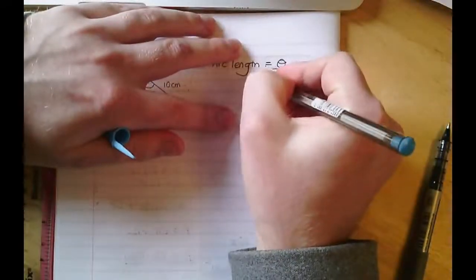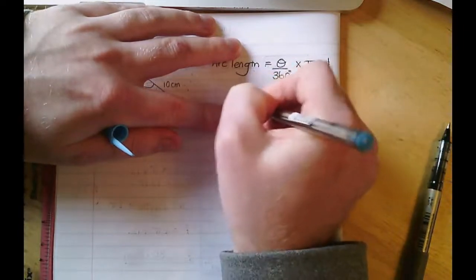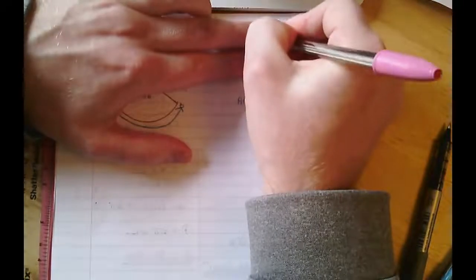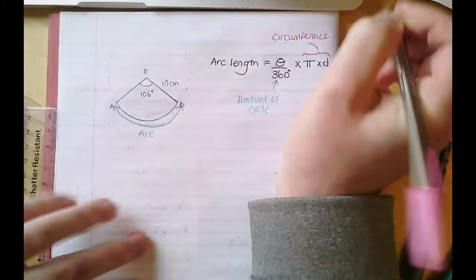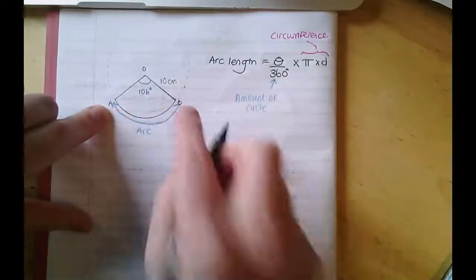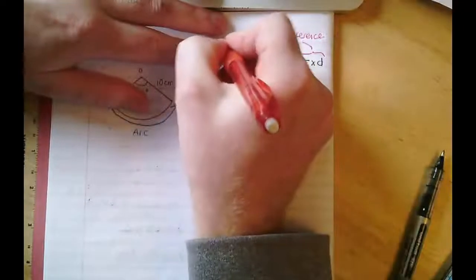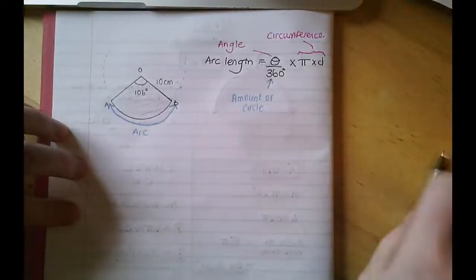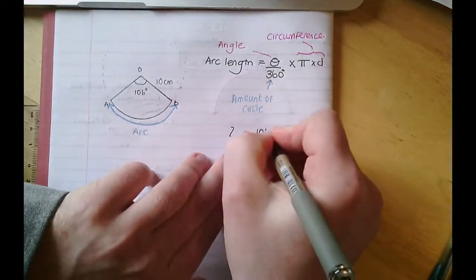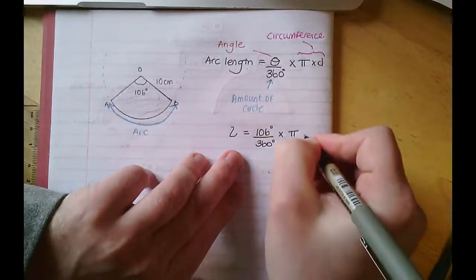To be clear: theta over 360 is the proportion of the circle, and we multiply that by the circumference formula pi times d. So the arc length L equals the angle divided by 360, times by pi, times by the diameter. Here the radius is 10 centimetres, so the diameter is 20 centimetres.